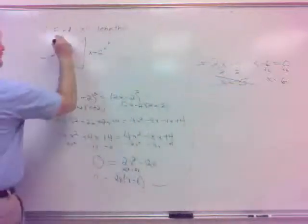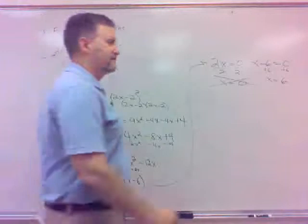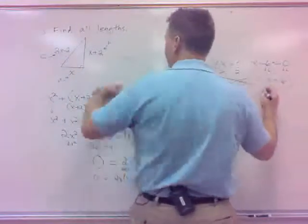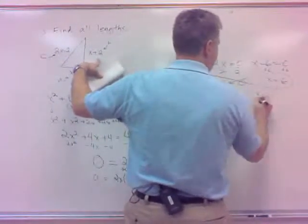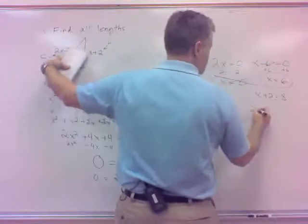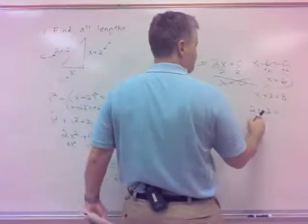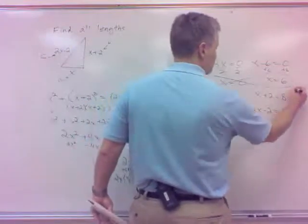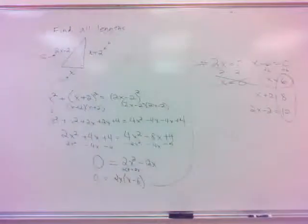All right, well, we're to find all the lengths. We've got one of the lengths, 6. What's the other lengths? Well, one of the other lengths is X plus 2. Well, if X is 6, that would be 6 plus 2, that would be 8. And then 2X minus 2 is the hypotenuse. Well, if X is 6, that would be 2 times 6 is 12 minus, that would be 10. 6, 8, and 10 are those lengths there. How about that?